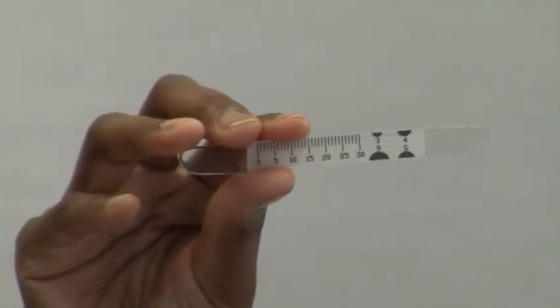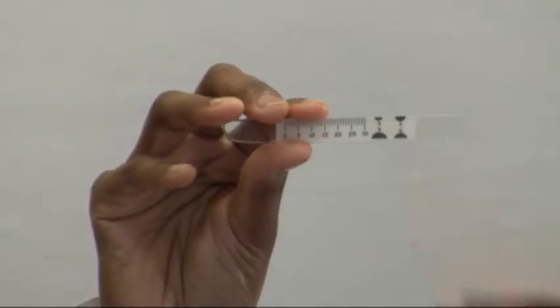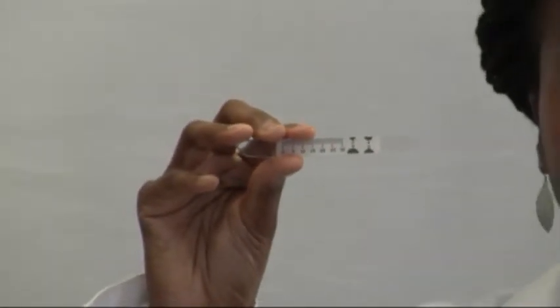It can also be used to measure the pupil size, with measurements of 3, 4, 5, and 6 millimeters conveniently located on the plate.